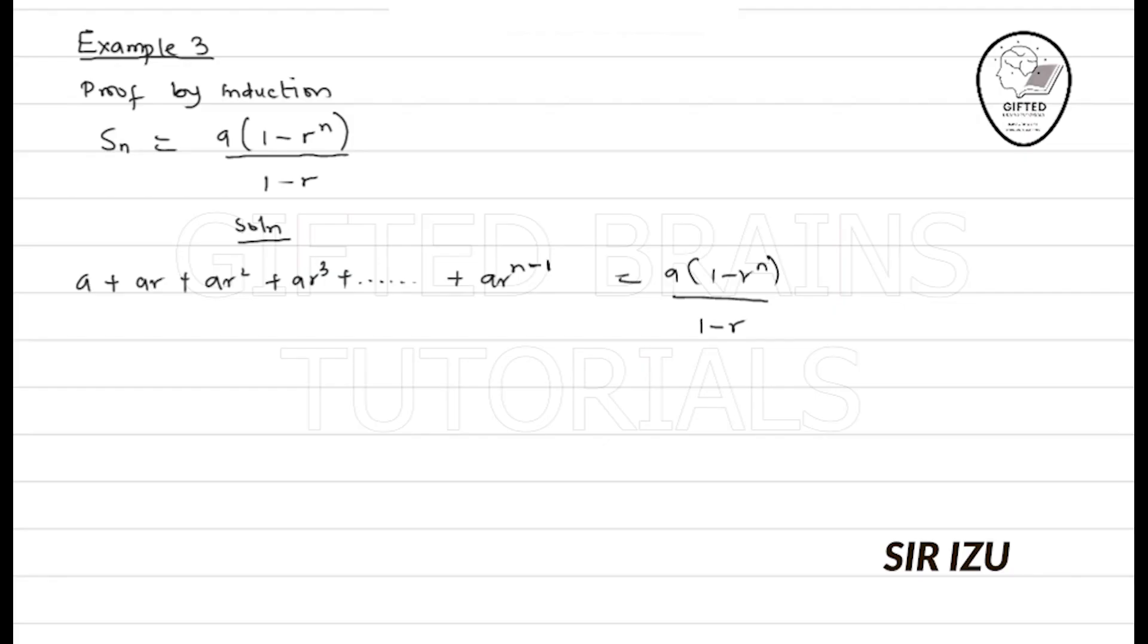So let's consider this example theory. Prove by induction the sum of n terms of a GP. That is, S_n is equal to A into 1 minus R raised to the power n over 1 minus R.